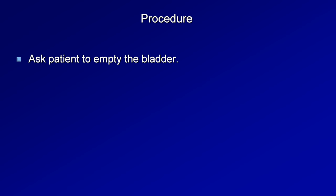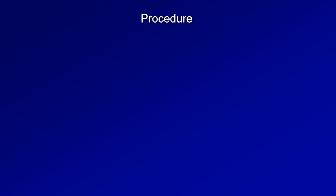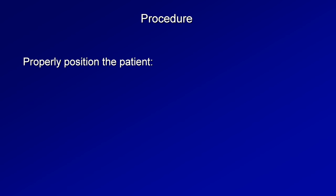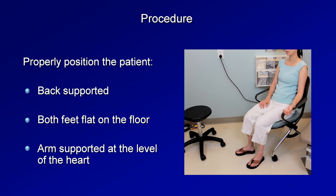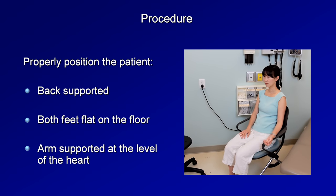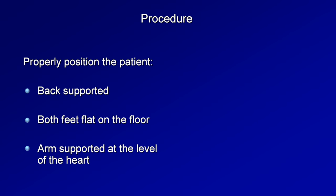So now, what's the actual procedure? First, although this is often omitted in practice, it's recommended that the patient first empty his or her bladder, as a full bladder may slightly elevate the pressure. Also, it's important that the patient be resting in a quiet room for at least 5 minutes beforehand. Once the patient has been resting and calm for a few minutes and you've washed or sanitized your hands, you can begin. The patient should be properly positioned: for ambulatory patients, this means seated with back supported, both feet flat on the floor, and with their arms supported at approximately the level of the heart. If there is not a tray or table on which the patient can rest their arm, you will need to support it for them. Failure to properly position the patient may result in an elevated reading which does not represent their true resting blood pressure.